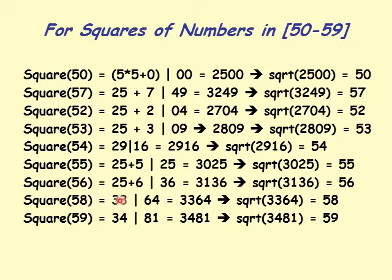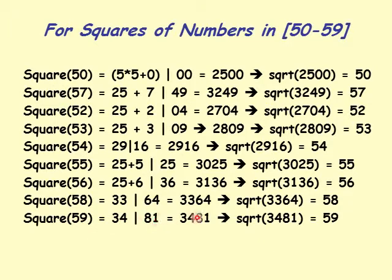Square of 58 is 3364, because 25 plus 8 is 33 on the left and 64 on the right. So square root of 3364 is 58. Square of 59 is 3481, and that means square root of 3481 is 59.